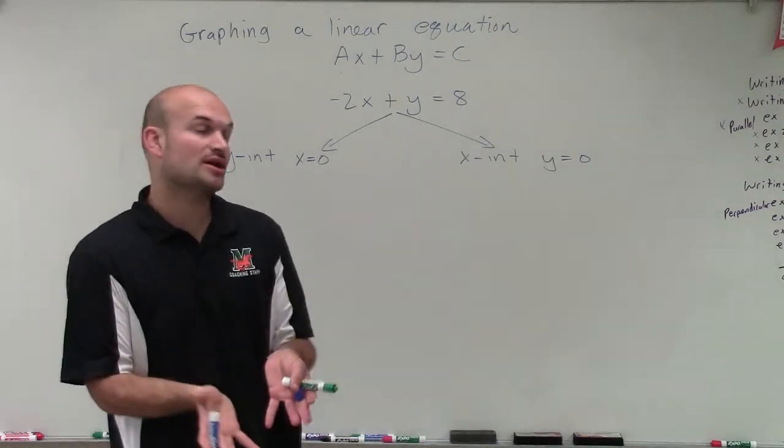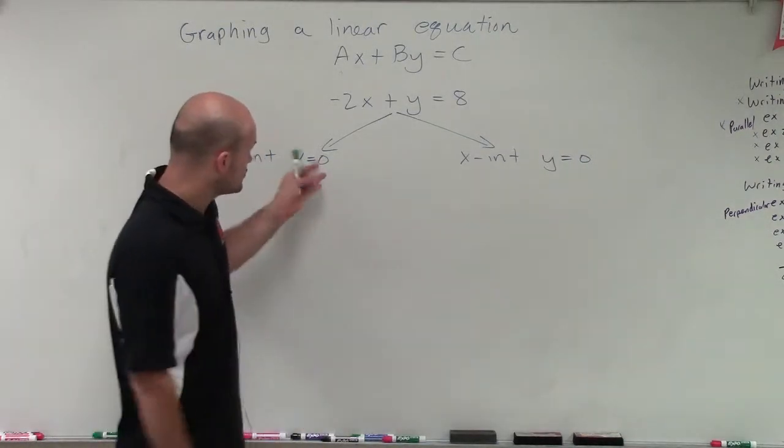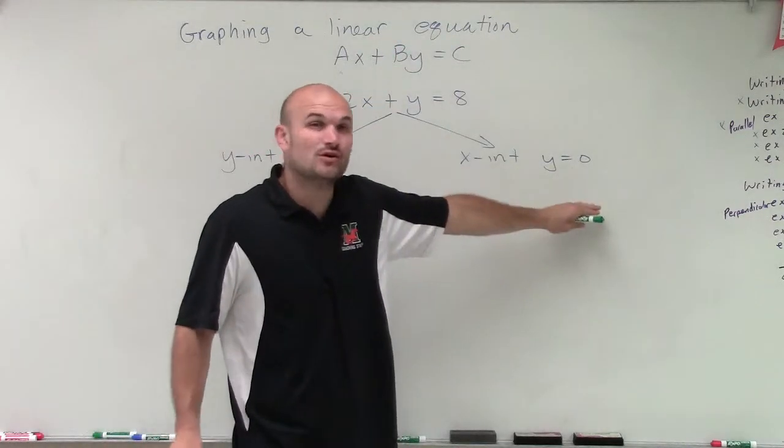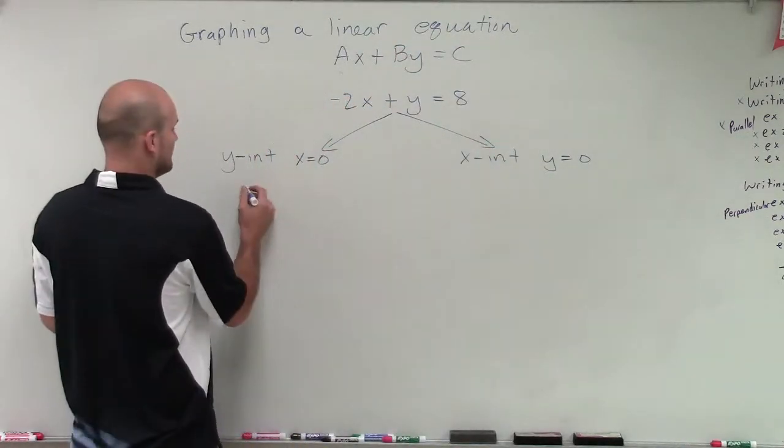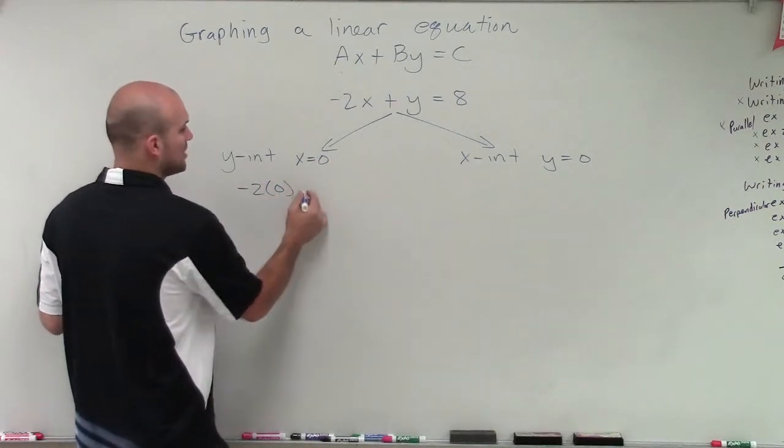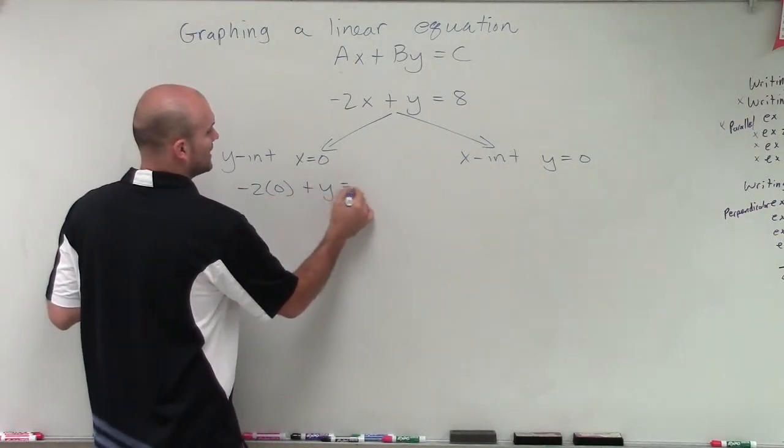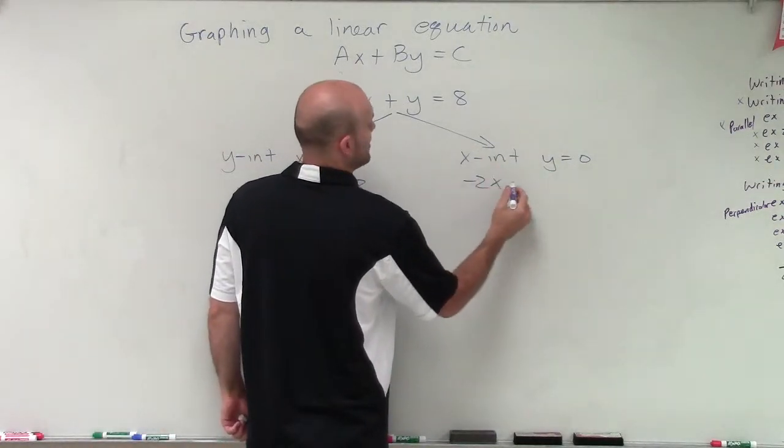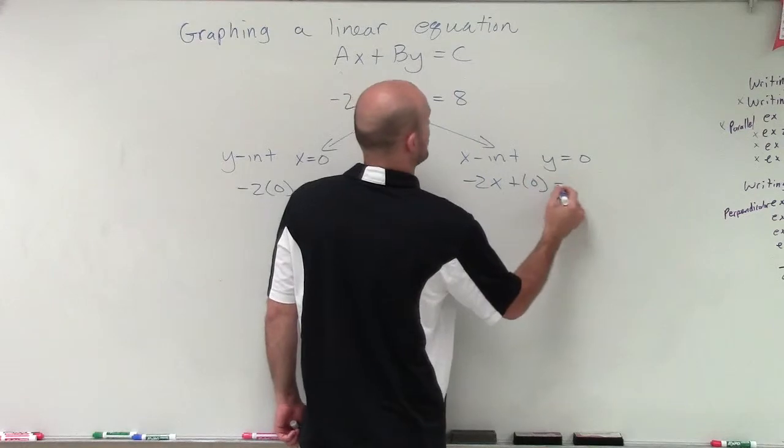I'm going to plug in those values. I'll plug 0 in for x to find the y-intercept, and plug 0 in for y to find the x-intercept. So I'll have negative 2 times 0 in parentheses plus y equals 8. And for the x-intercept, I'll have negative 2x plus 0 equals 8.